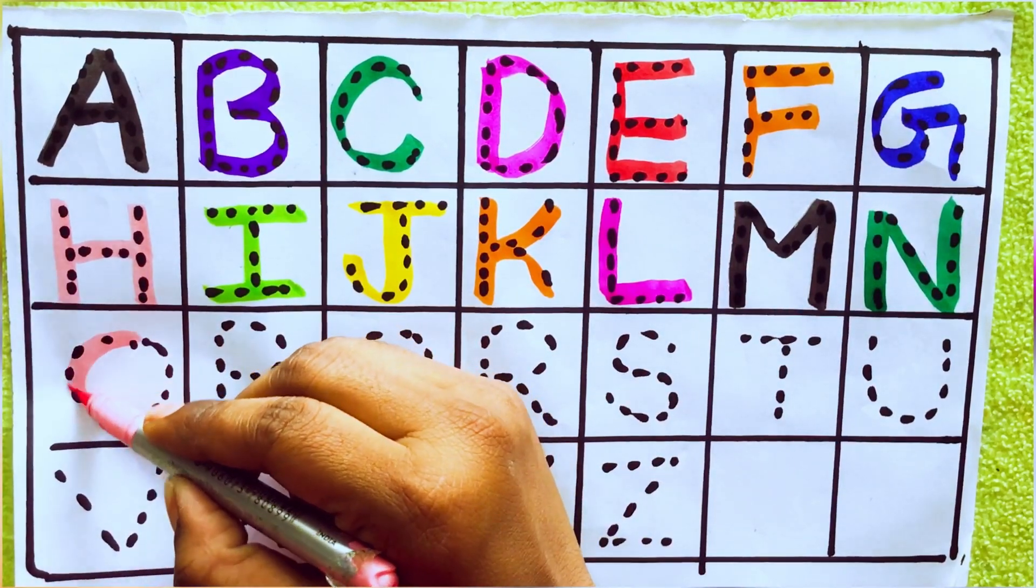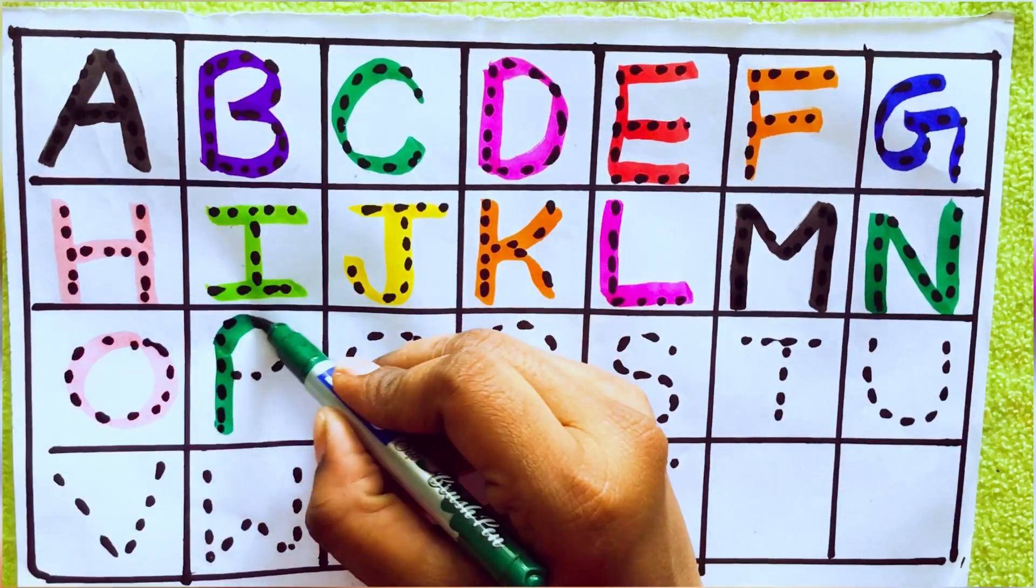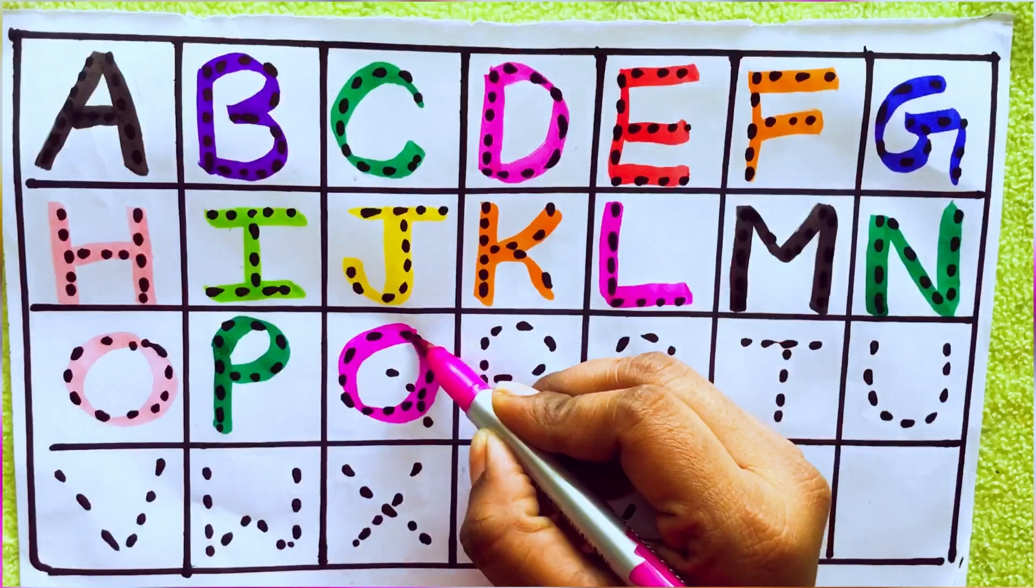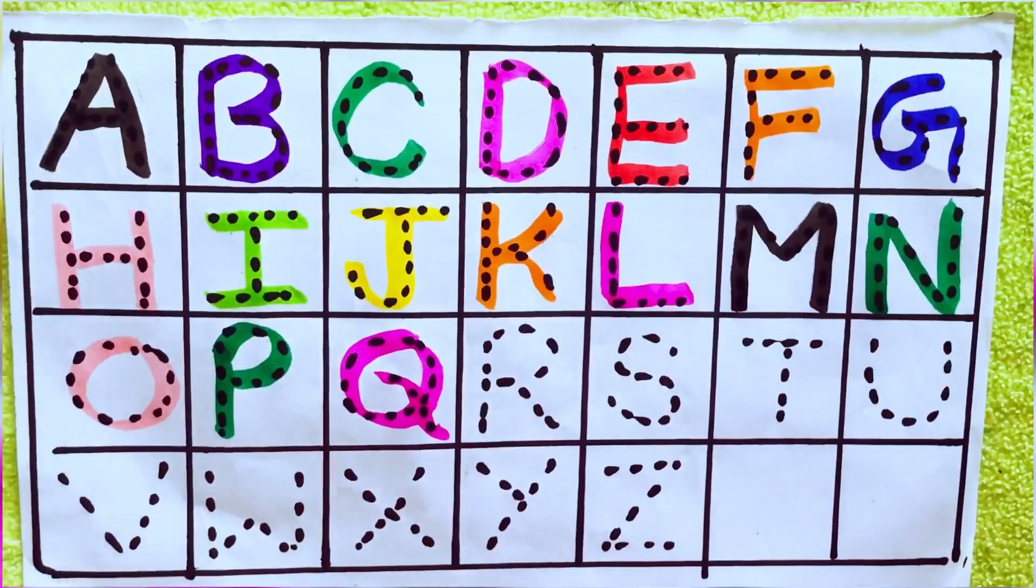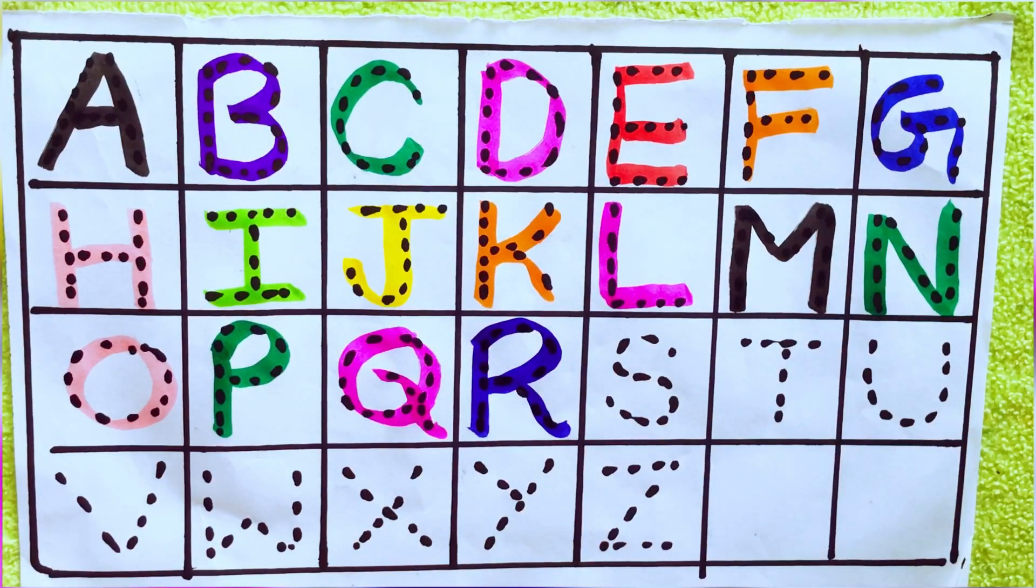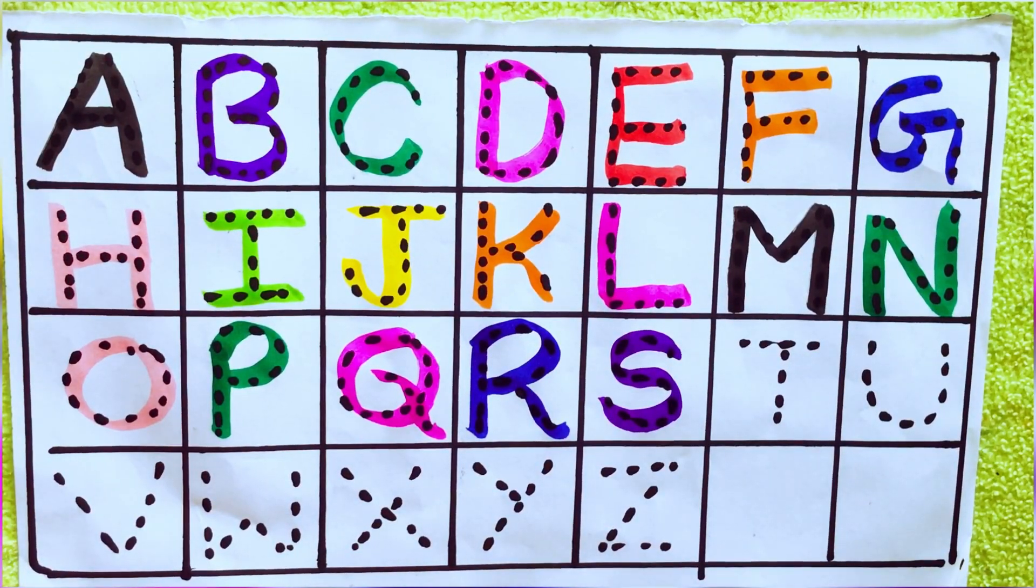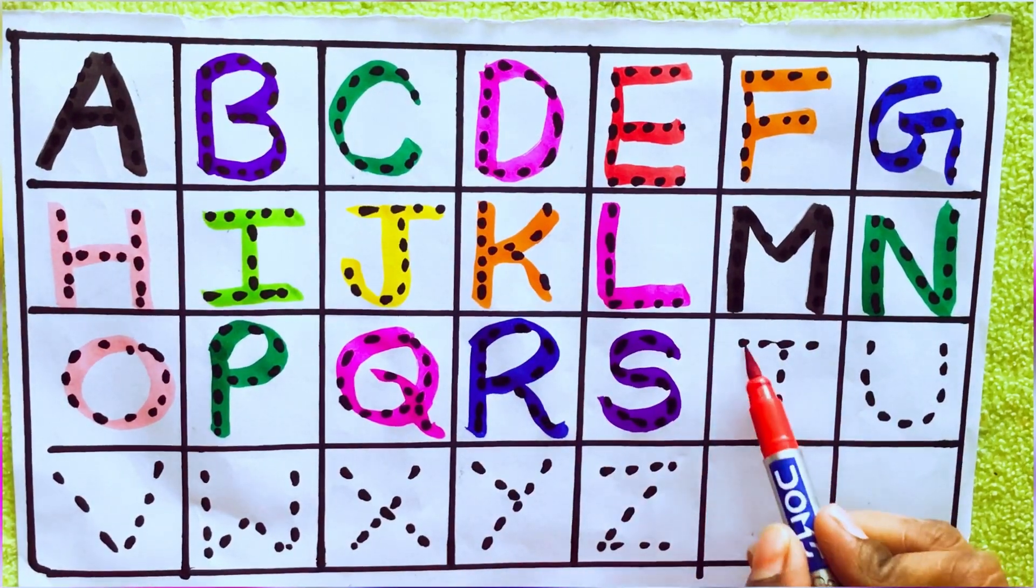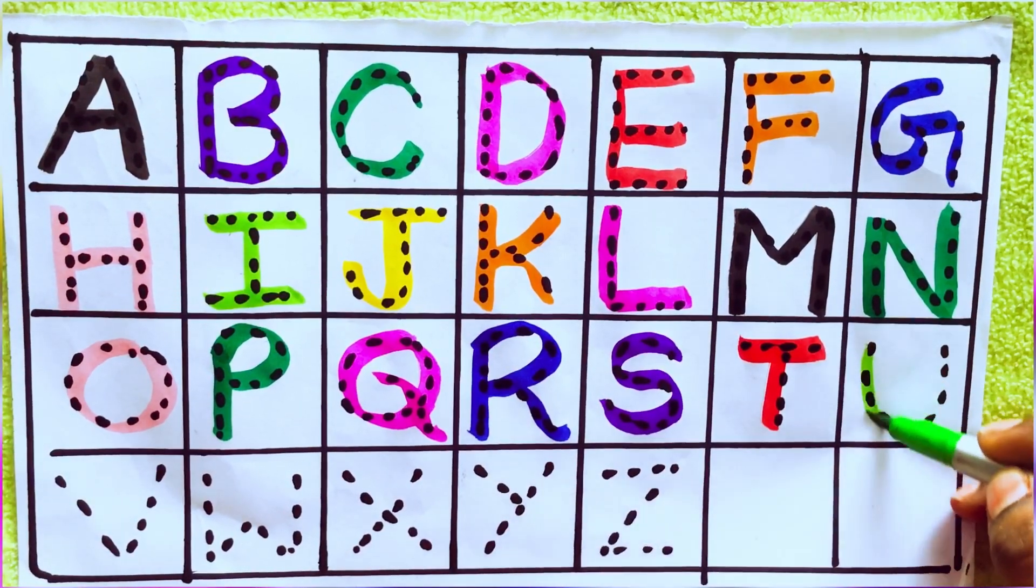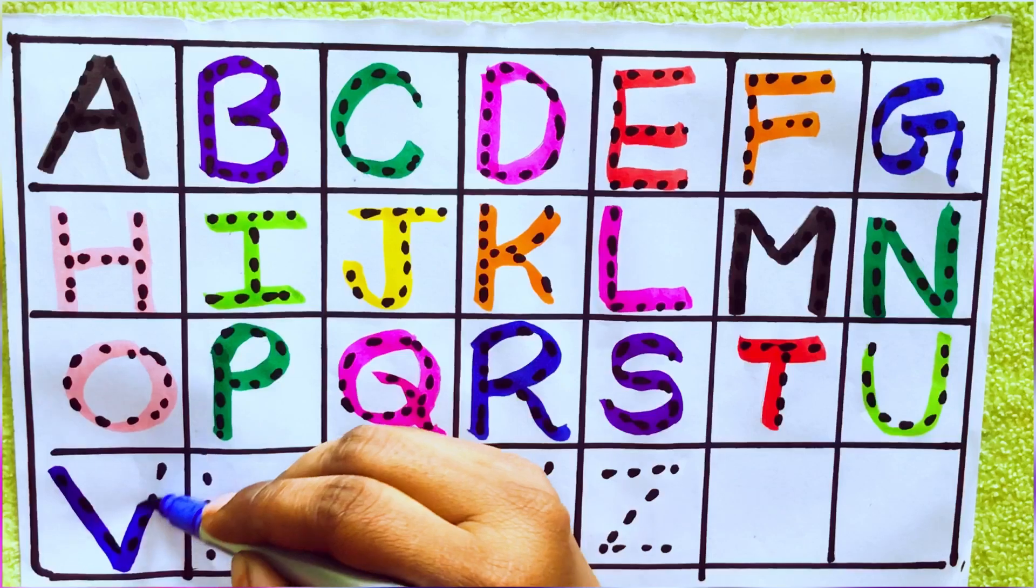Pink color O, O for orange. Green color P, P for parrot. Pink color Q, Q for queen. Blue color R, R for rose. Pink color S, S for sunflower. Red color T, T for table. Green color U, U for umbrella. Blue color V, V for van.